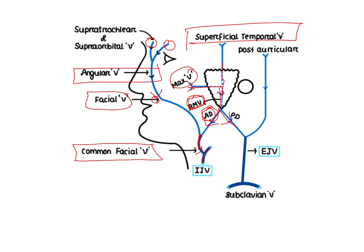The posterior division of the retromandibular vein goes and meets the posterior auricular vein. Both confluence and join to form the external jugular vein, which ultimately drains into the subclavian vein. This allows us to understand the full course of the external jugular vein.